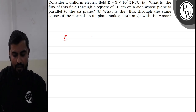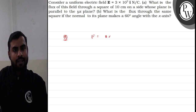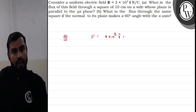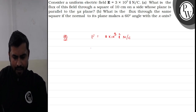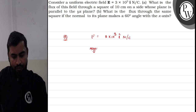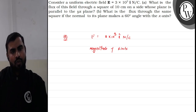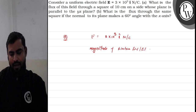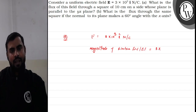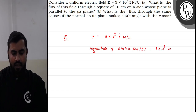In the first part, the electric field intensity is given as 3 into 10 raise to the power 3 i-cap Newton per coulomb. If we talk about the magnitude of this electric field, it is given as E equals 3 into 10 raise to the power 3 Newton per coulomb.